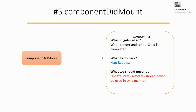componentDidMount is what we've been waiting for - this is where you write your HTTP requests. It gets called once render is complete and once render child is completed. What you should never do: avoid updating state in a synchronous manner. You can update state with a callback or asynchronously when you have the response, but try not to update state synchronously here.